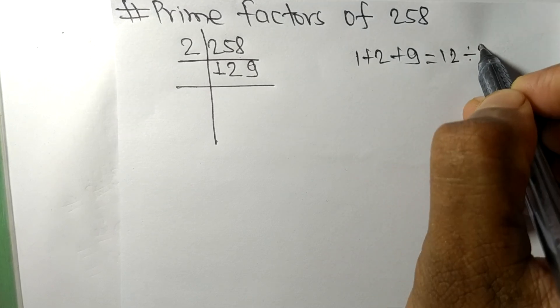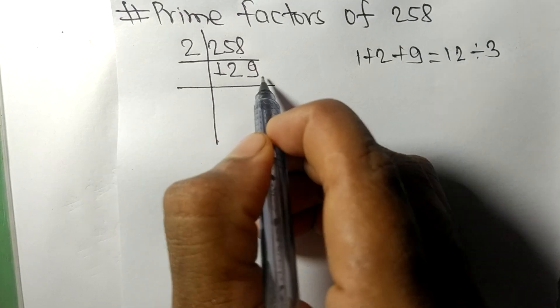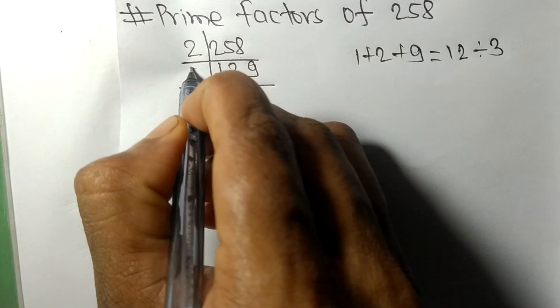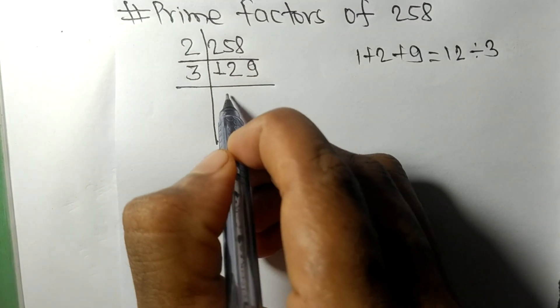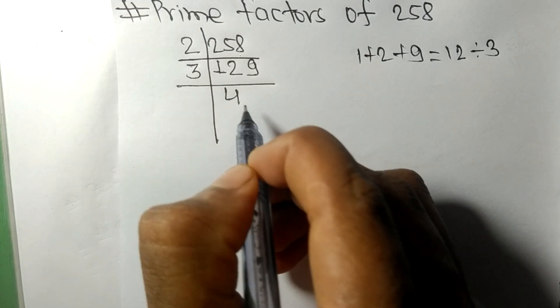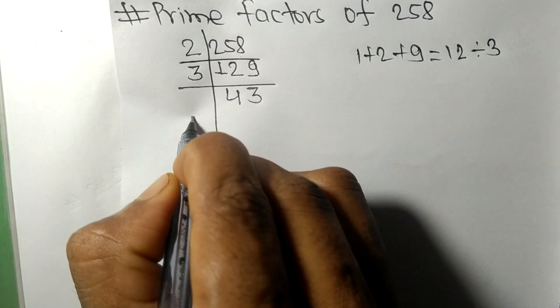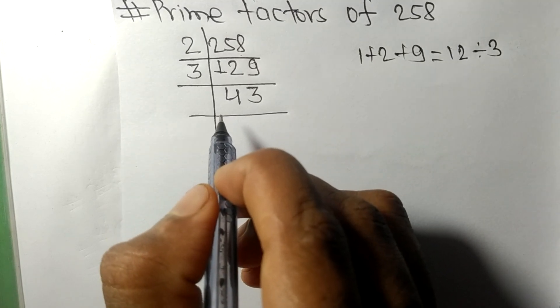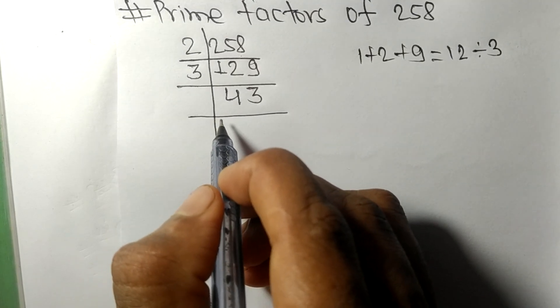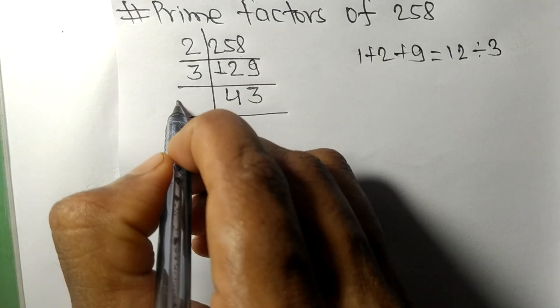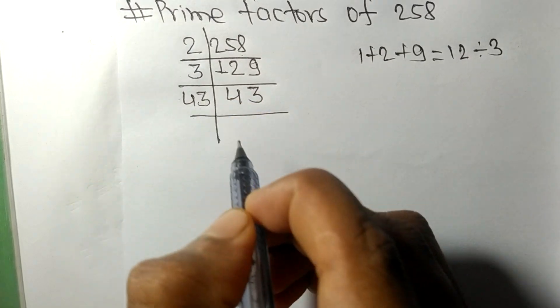exactly divisible by 3, so 129 is also divisible by 3. 3 times 4 means 12, 3 times 3 means 9. Now we got 43, which is a prime number, so it is divisible by 43 itself, and